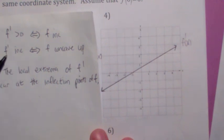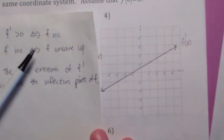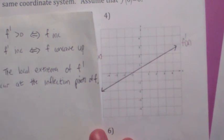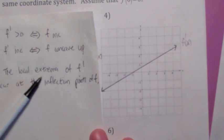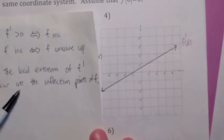Anyway, furthermore, look at number 2. Wherever f prime is increasing, f is concave up. Wherever f prime is decreasing, f is concave down. So if f prime goes from increasing to decreasing, that would be a local max of f prime, you'd have to have an inflection point of f. And that's what this says. The local extrema of f prime are the inflection points of f, or at least they occur at the inflection points of f.